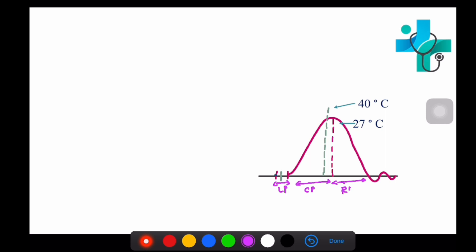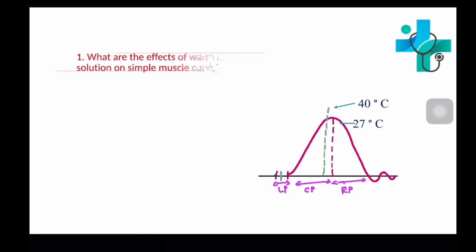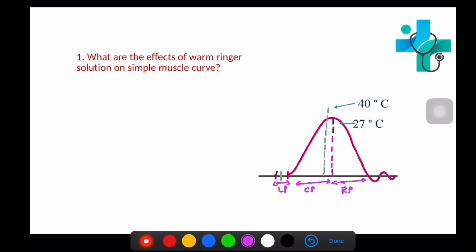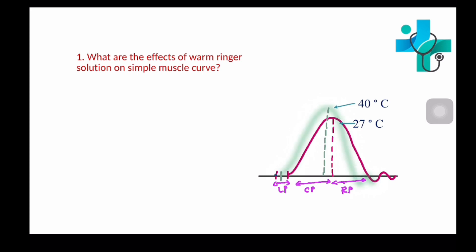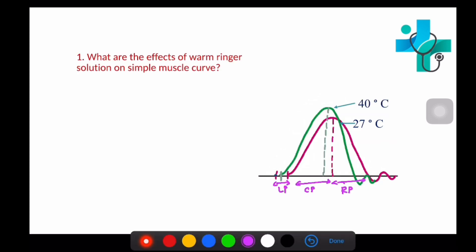The first question is: what are the effects of warm Ringer solution on simple muscle curve? The green curve shows the effect of warm Ringer solution. When warm Ringer solution is applied, the latent period decreases, contraction period also decreases, relaxation period also decreases, whereas the height of contraction increases.